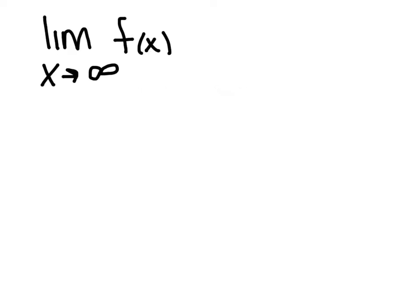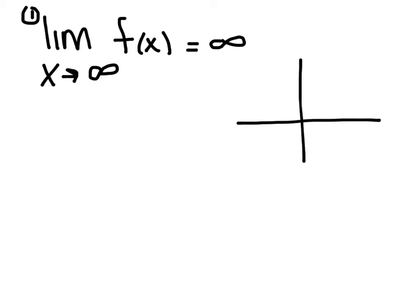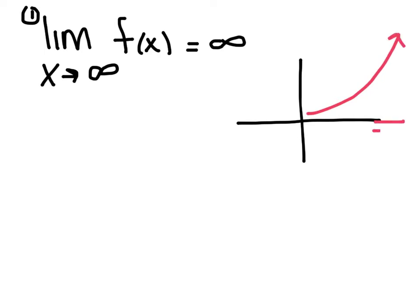We're going to try to draw some separate pictures here. Number one: the limit as x approaches infinity of f of x equals infinity. What is that saying? As your x values get larger, as your x values get bigger, your y values are going towards positive infinity. As you go out this way, your y values are going up.